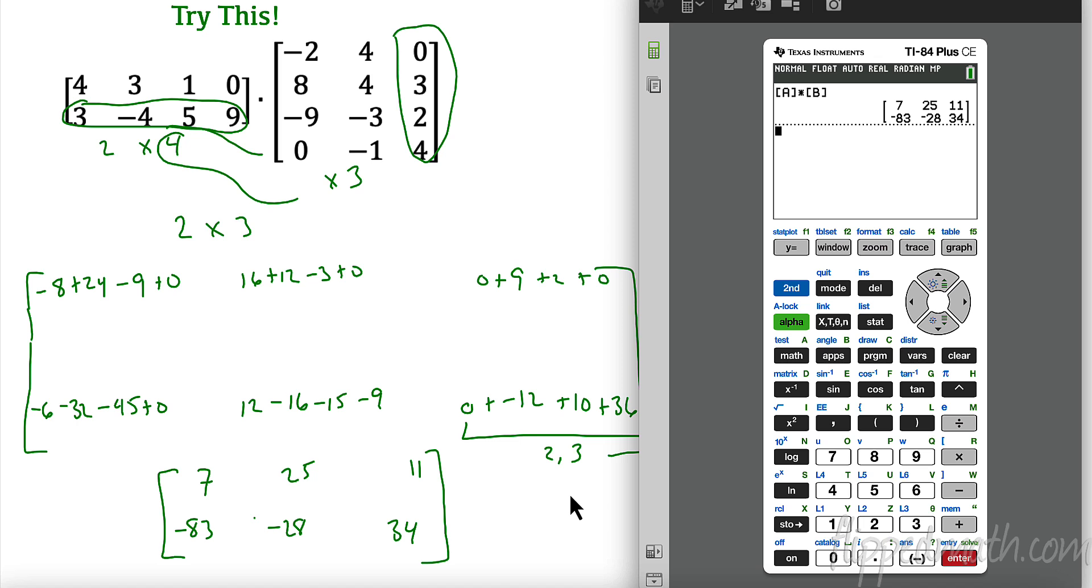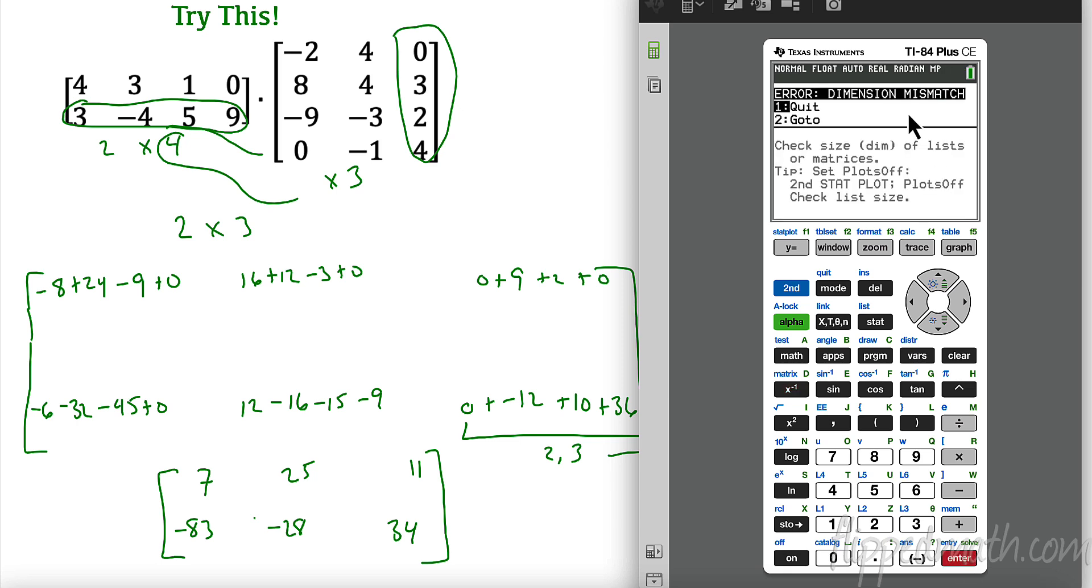All right. Now let's see what happens if I do B times A. So second matrix. I'm going to do B times second matrix A. See what happens. Dimension mismatch. Because this was a 4 by 3, and this was a 2 by 4, they would not match dimensions, right? That's why it won't work.